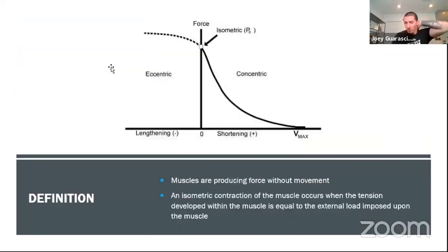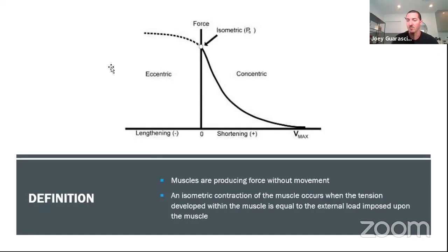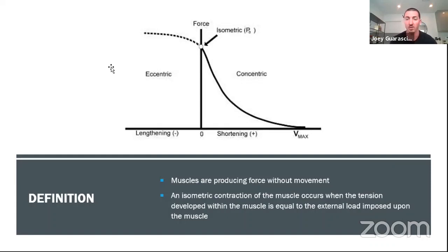So what is an isometric contraction? We've got to boil it down to the bare basics. Essentially, it's a muscle or muscles producing force without movement. An isometric contraction occurs when the tension developed within the muscle is equal to the external load imposed upon it. The easiest way to think of it is to go up against a wall and push as hard as you can — there's absolutely zero movement, even though you're still contracting and fascial tensile strength is being developed.